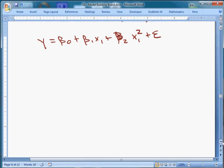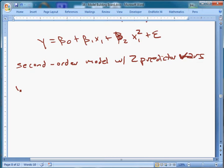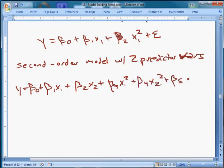We can look at a second-order model with one predictor variable. This means we only have one x. Beta1x1 plus beta2x1 squared plus epsilon. And now we've just modeled the nonlinear relationship between y and x.